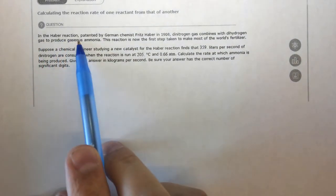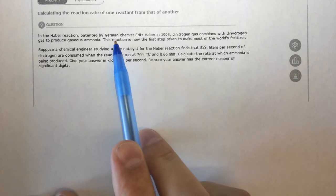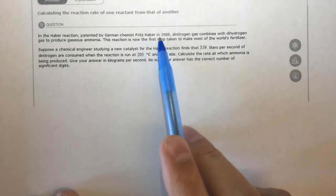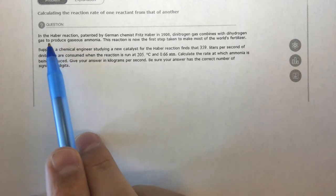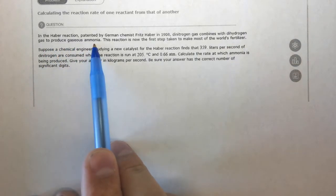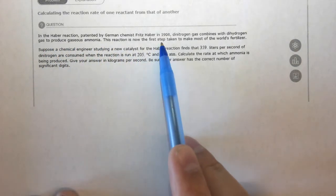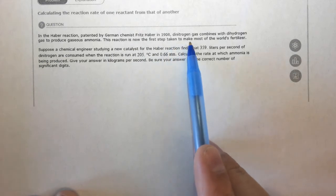This question says, in the Haber reaction patented by German chemist Fritz Haber in 1908, dinitrogen gas combines with dihydrogen gas to produce gaseous ammonia. This reaction is now the first step taken to make most of the world's fertilizer.